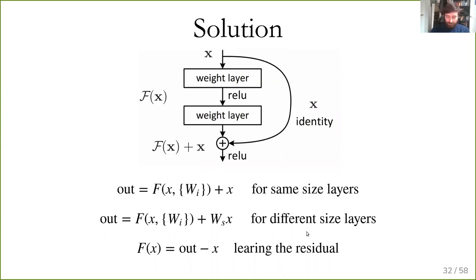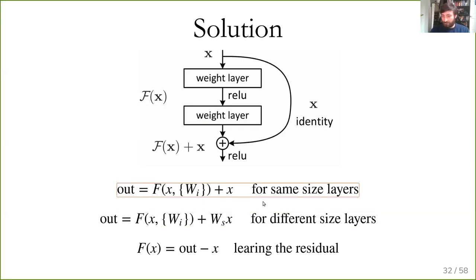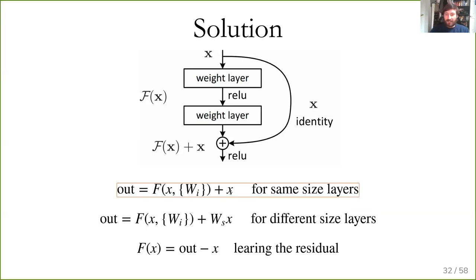This is straightforward when layers have the same size — you use the identity connection. If layers have different sizes, there's usually a linear transformation instead of the identity. The thing computed is F(x) plus x, the sum of the weight layer output and the identity. The weight layer says how should the result be different from the identity, and both results are added together before applying the ReLU. During backpropagation, the gradient propagates through the weight layer and also through the identity, which is what enables training much deeper networks.